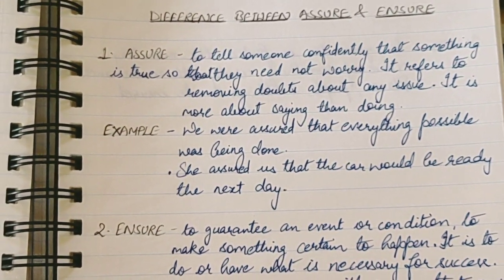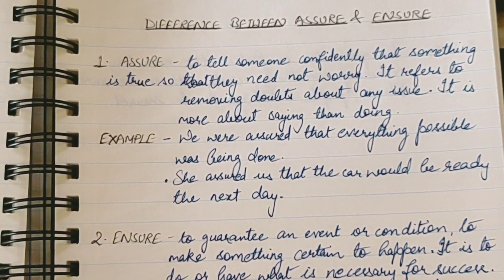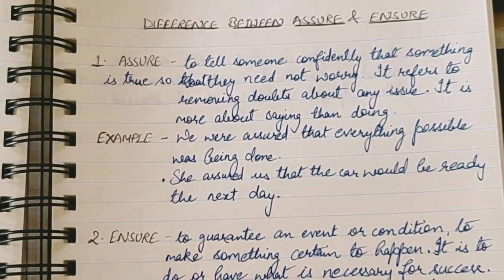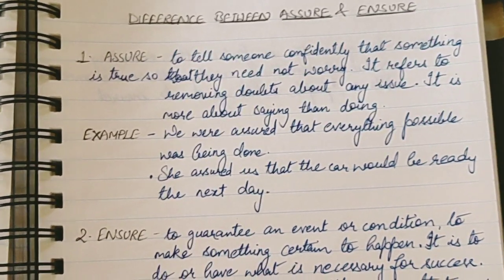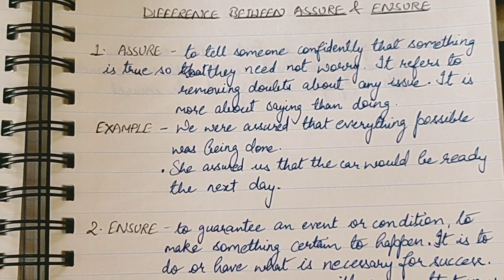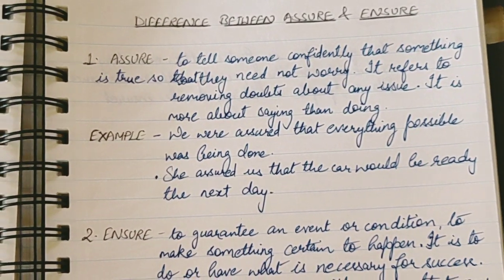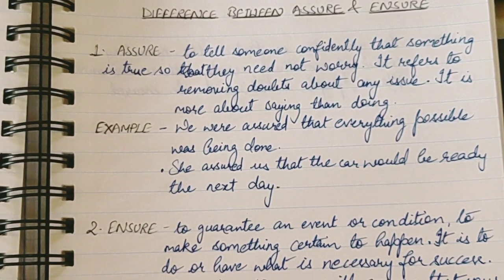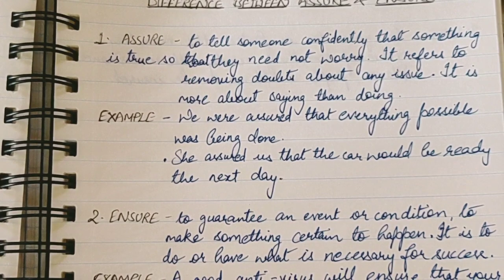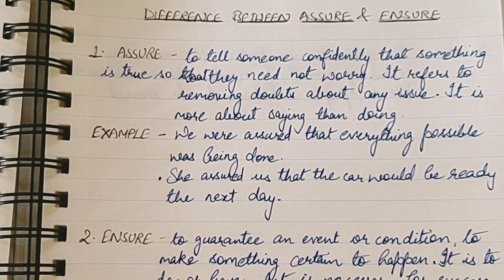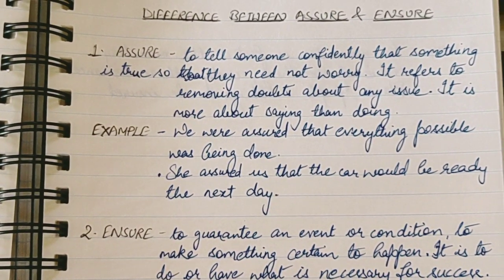The first word is 'assure.' Assure means to tell someone confidently that something is true so that they need not worry. We are giving assurance to someone, saying confidently that something is true so the person in front of us will believe us and does not need to worry. It refers to removing doubts about any issue.